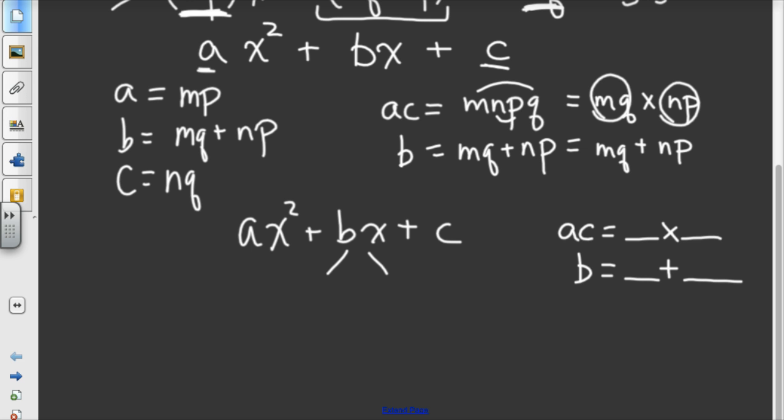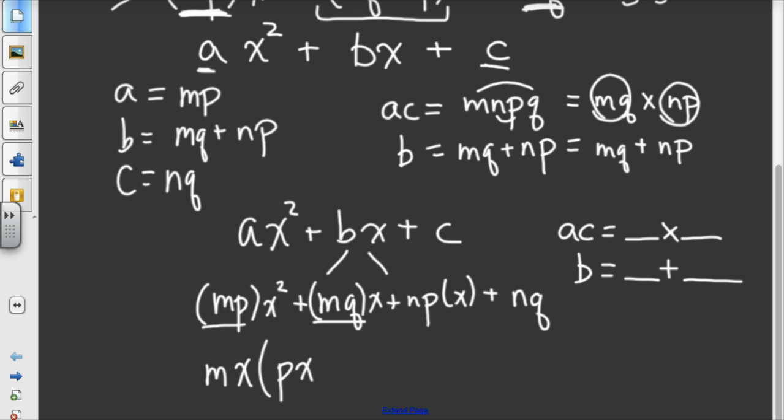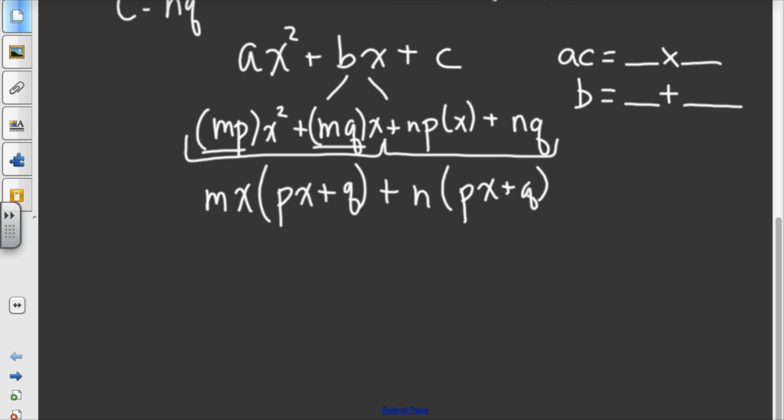So this becomes then mp x squared, and then I put in here the two values I found. So mq x plus np x, and then c is still nq. And then when I factor here, I always get an x out plus the m is going to factor out. And I'm left with px plus q. And then in the second grouping, I factor by grouping, so putting these in two lines. In the second part, I'm going to have an n in common. And then I get px plus q left over. And then I have my two factors, px plus q is the one factor. Pull that out. And then the other factor is what's left over, mx plus n.